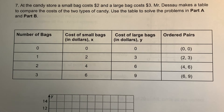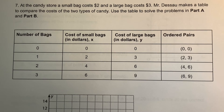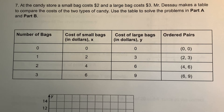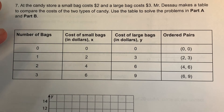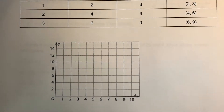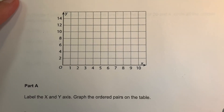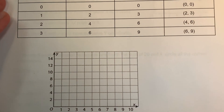At a candy store, a small bag costs two dollars and a large bag costs three dollars. Mr. Desol makes a table to compare the cost of the two types of candy. Use the table to solve parts A and B. We need to label the x and y axes according to the ordered pairs in the table.